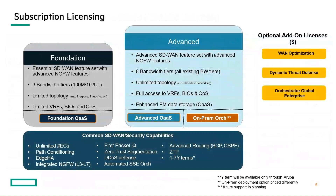Here we take a look at the subscription licensing for the EdgeConnect platform. It's broken down into two options: Foundation and Advanced. Foundation is the cost-effective option that gives you the essential SD-WAN feature set along with advanced next-generation firewall services. There are three bandwidth tiers — 100 Mbps, 1 Gbps, and unlimited — with a limited topology allowing for a max of four regions and four hubs, with limits on VRFs, business intent overlays, and quality of service.